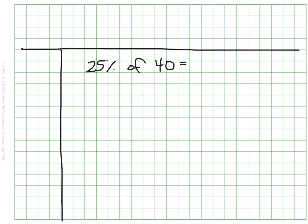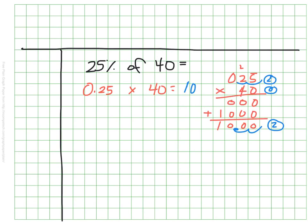Imagine, for example, that there are 40 people and 25% of them are wearing a hat. Your job is to figure out what 25% of 40 is. We can just do a quick rewrite: we know that 25% is 25 hundredths, we know that 'of' tells us we can multiply, so we're really just here with a multiplication question — 25 hundredths times 40. When I work out the multiplication, I can see that 25% of 40 is 10.